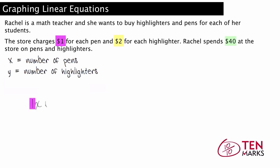Since pens are $1 each and highlighters are $2 each, the amount she spends is 1X plus 2Y. And since she spends $40 on pens and highlighters, the equation looks like this: 1X plus 2Y equals 40.